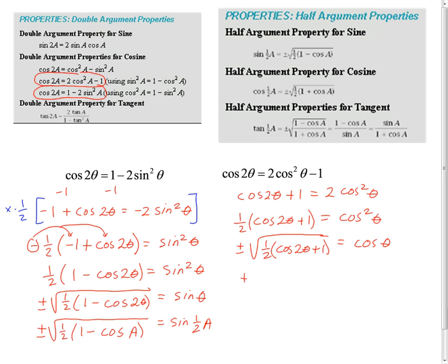plus or minus the square root of 1 half cosine 2 theta plus 1 equals cosine theta. And here again, we're going to do the old switcheroo, and we get 1 half cosine. Now I'm going to call that a plus 1. And if it's a on that side, then on this side, it would be 1 half a.